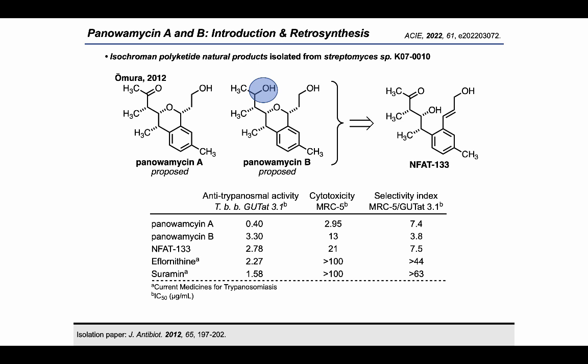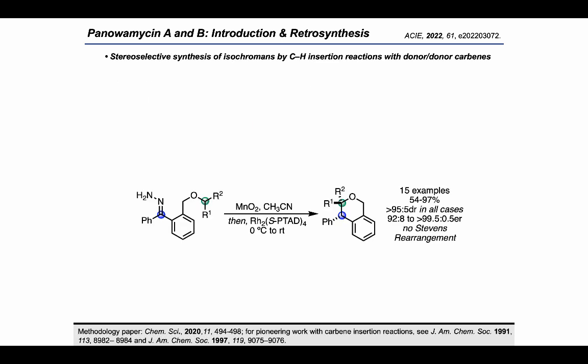Given our previous reports synthesizing isochromans using rhodium-catalyzed CH-insertion reactions, we thought these structures would make an attractive target for total synthesis. In 2020, we reported a method for the stereoselective construction of substituted isochromans by CH-insertion using donor-donor carbenes. This reaction proceeds by oxidizing aryl-aryl hydrazones to the corresponding diazo species under mild and chemoselective conditions with manganese dioxide. In a one-pot protocol, a rhodium-carboxylate catalyst is subsequently added, which rapidly decomposes the diazo to afford a rhodium carbene. CH-insertion occurs next, generating isochromans in good yields, with perfect diastereoselectivity for the cis-isomer in all cases and with high enantioselectivity.